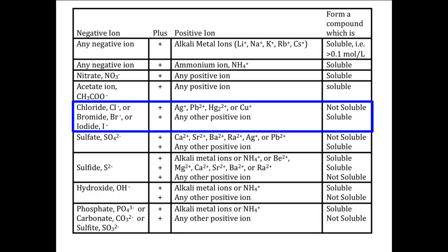Now we get to the interesting ones. Row five has three ions in the first column and two different results in column four. How does this work? First of all, all three negative ions are considered together. The pluses go with the particular line in the positive ions column and the result on that line. This means that chloride or bromide or iodide ion, combining with Ag+, Pb2+, Hg2 2+, or Cu+, makes a compound that is not soluble, while chloride or bromide or iodide ion combining with any other positive ion forms a compound that is soluble.